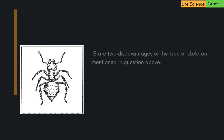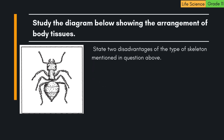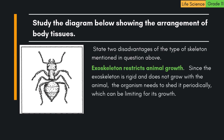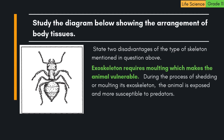State two disadvantages of the exoskeleton. 1. Exoskeleton restricts animal growth. Since the exoskeleton is rigid and does not grow with the animal, the organism needs to shed it periodically, which can be limiting for its growth. 2. Exoskeleton requires molting, which makes the animal vulnerable. During the process of shedding or molting its exoskeleton, the animal is exposed and more susceptible to predators.